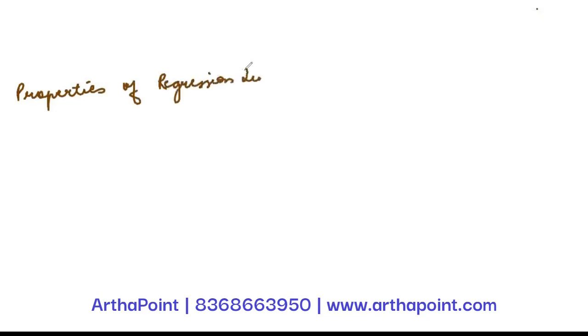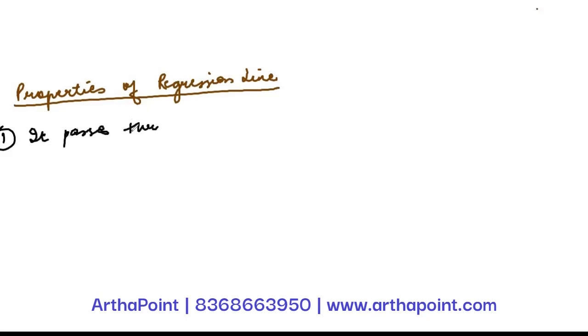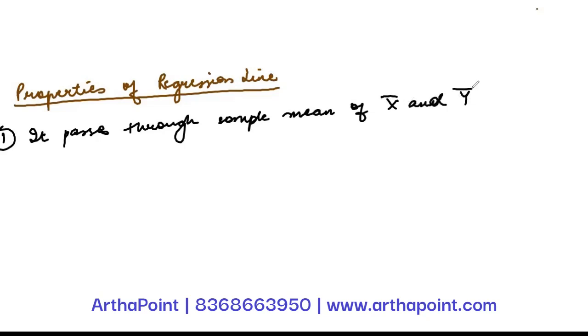Properties of regression. The first property of regression is that it passes through the sample means x̄ and ȳ. This can easily be proved using normal equation 1.